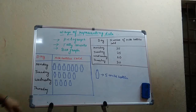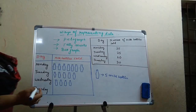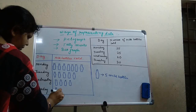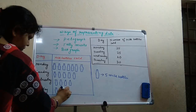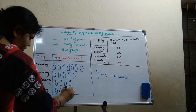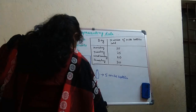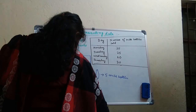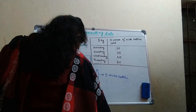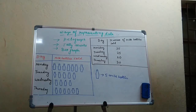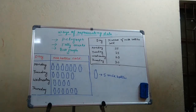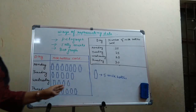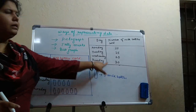Now we move to Thursday. Thursday the number is 30. So 30 divided by 5 is 6 — so 6 bottles we need to draw here. This is how we have represented the milk bottles in picture form.